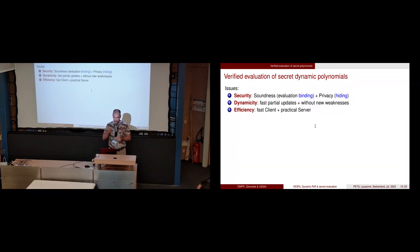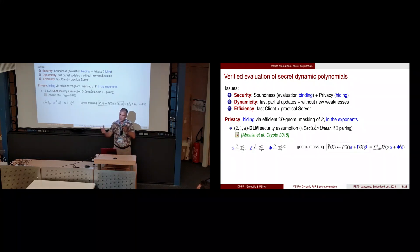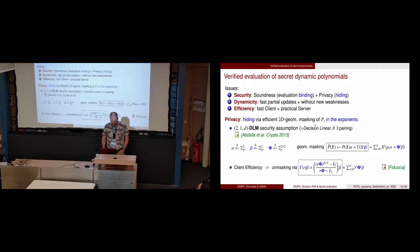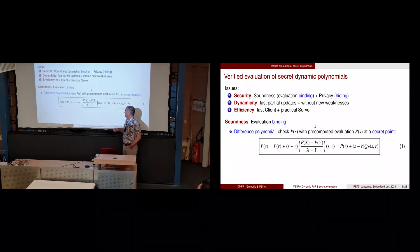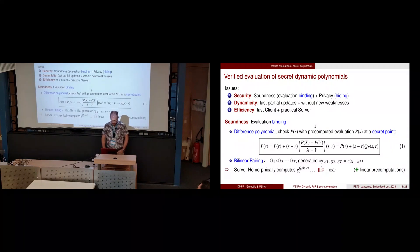We want dynamicity so we need to be able to change one coefficient of a polynomial without redoing the setup, and we need efficiency so everything is practical. For privacy, we hide the coefficient of the polynomial by adding random values that are fast to unmask so the coefficients remain secret. To check it's correct, we check the evaluation with a previous evaluation point. We use a classical polynomial formula for this and do this check in the exponents because things must remain private. For this we need pairings so we can do multiplication in the exponents.